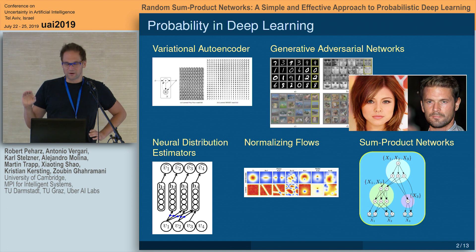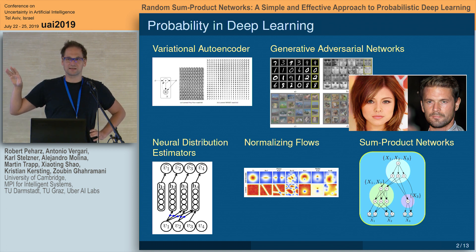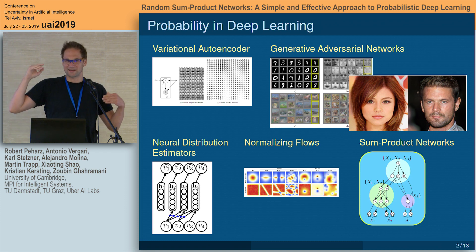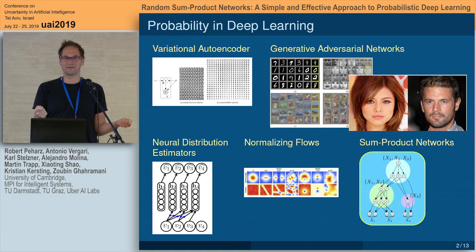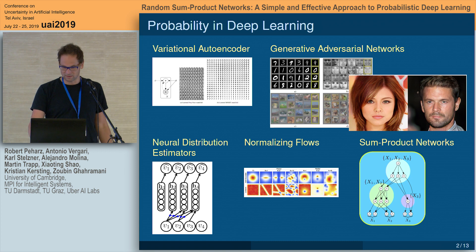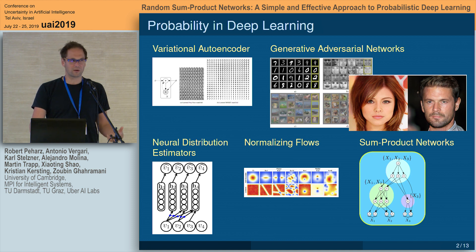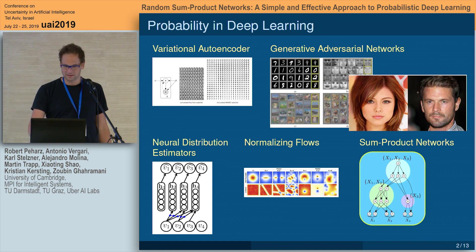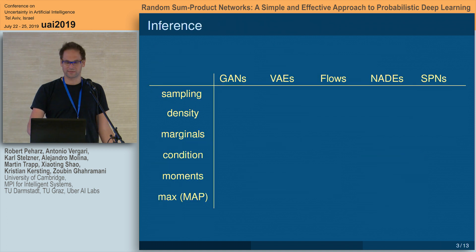You might say: VAEs, GANs, NADs, and flows I would associate with deep learning, but not so much sum-product networks. And that's precisely the point of this paper — we want to argue that we can make them more similar, that we can use sum-product networks for deep learning. There's a good reason why we would like to use sum-product networks over the other models, and that reason can be summarized with one word: inference.